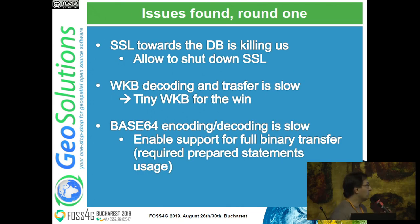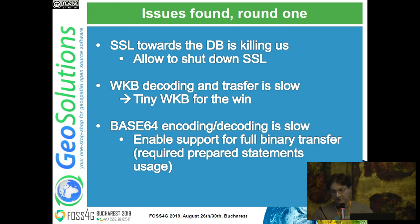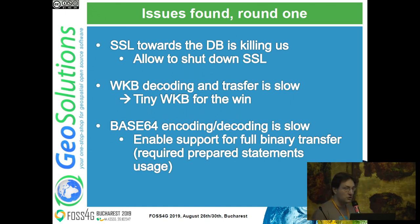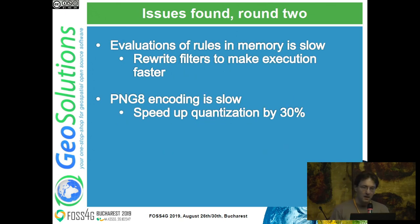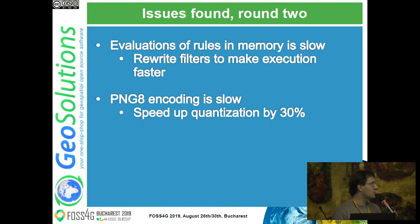One thing killing performance was SSL communication to the database - encryption and decryption of data was killing performance. So I added the ability to shut down SSL, which is quite useful if your database is on a well-protected local network. Then WKB decoding and transfer was slow, so we switched to tiny WKB instead. Then we found base64 encoding and decoding of binary data from the database, and enabled full binary transfer. The evaluation of rules in memory was slow due to so many rules, so I added a way to rewrite filters in memory to make resolution faster. Finally, PNG encoding of tiles was a bottleneck - we improved that too.